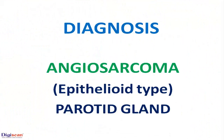Based on histomorphological features and findings of immunohistochemistry, a diagnosis of angiosarcoma of epithelioid type involving the parotid gland was made.